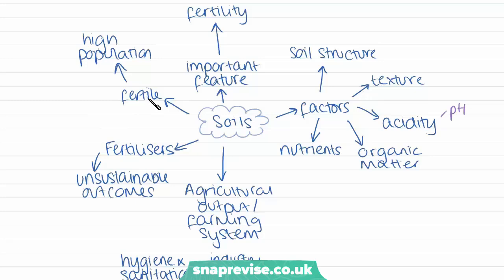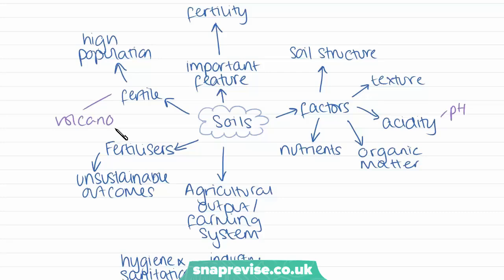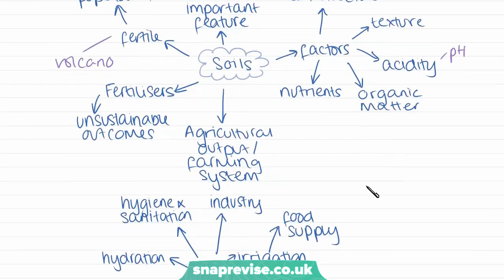This is where we have volcanoes, because volcanic lava and ash makes soils really fertile. So if you look at a map of population density you will often see high population densities in volcanic areas.